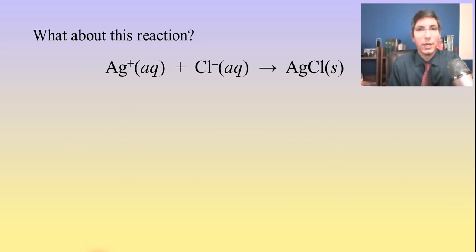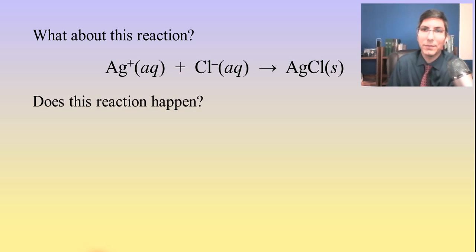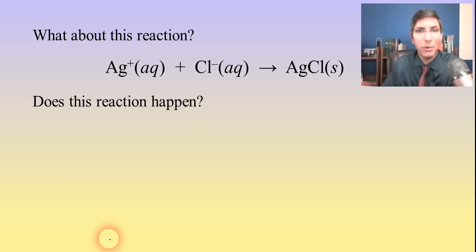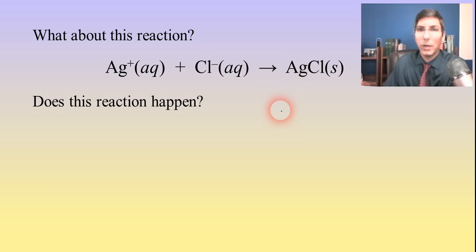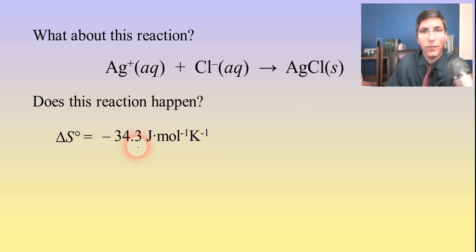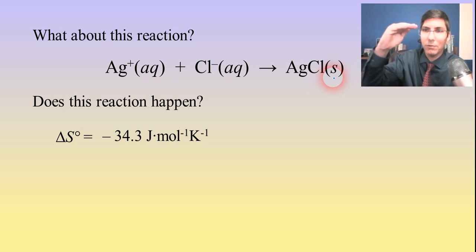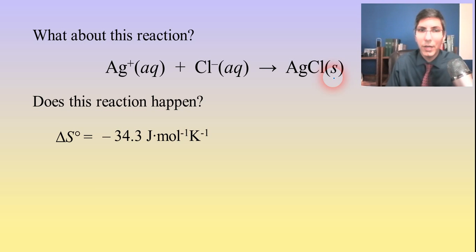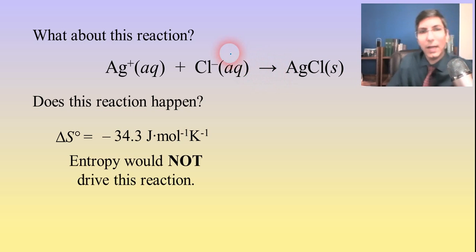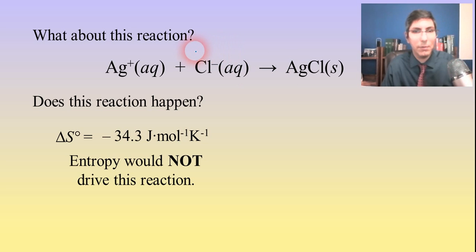Here's a net ionic equation we've looked at before. Does this reaction happen? Yes — this is one we've written many times in net ionic equations. Silver chloride is insoluble, so you are going to make that precipitate. But at what conditions? If we look at the delta S, we find that entropy is decreasing. You can tell just by looking at the equation — aqueous species turn into a solid, and going from aqueous to solid is a decrease in entropy. So entropy is not going to drive that reaction.